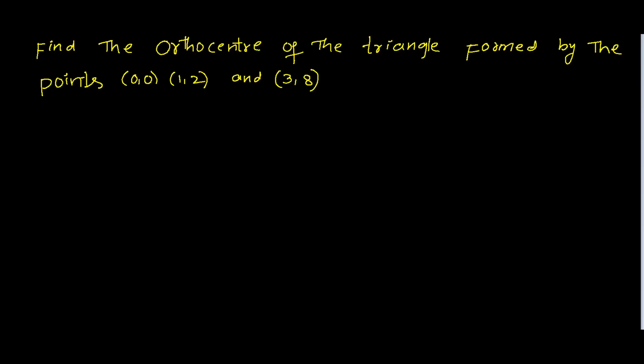Straight lines M-set shortcuts. First problem: find the orthocentre of the triangle formed by the points (0, 0), (1, 2), and (3, 8).